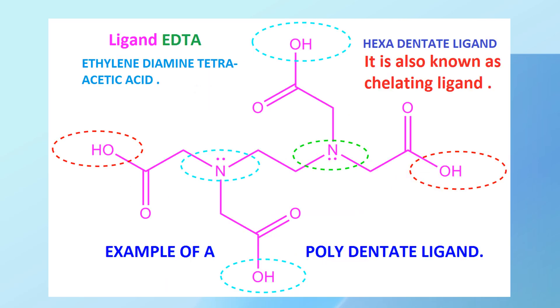Ligands are molecules or ions that surround the central metal atom or ion and donate electron pairs to form coordinate covalent bonds. Ligands can be classified as monodentate, donating one electron pair.